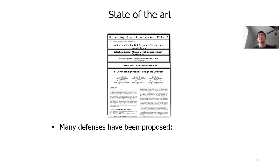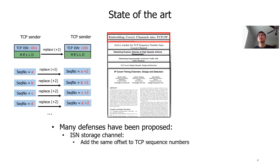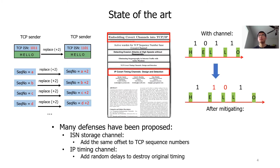Over the years, many defenses have been proposed. Let's look at two examples. The first example is the TCP initial sequence number channel, a storage channel. To mitigate it, we can add the same offset to the TCP sequence number of every packet. The second example is the IP timing channel. After detecting timing channels using statistic-based methods, we can add a random delay to destroy the suspicious packet timing. Note that both defenses are running in software.